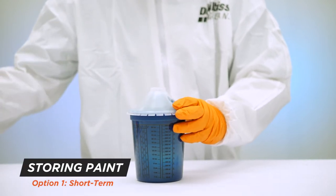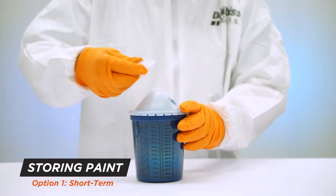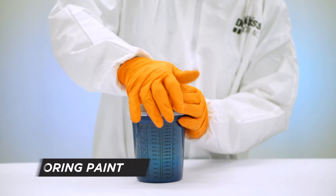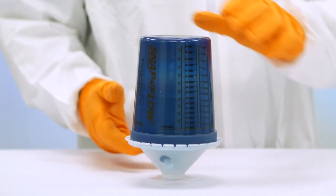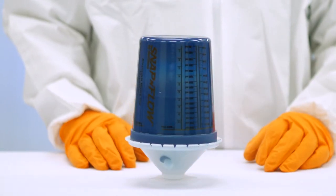For short-term storage, there's a special plug included with the lids. Insert this into the adapter opening in the lid. Then store the cup and lid assembly inverted, which allows the filter to remain wet with paint.